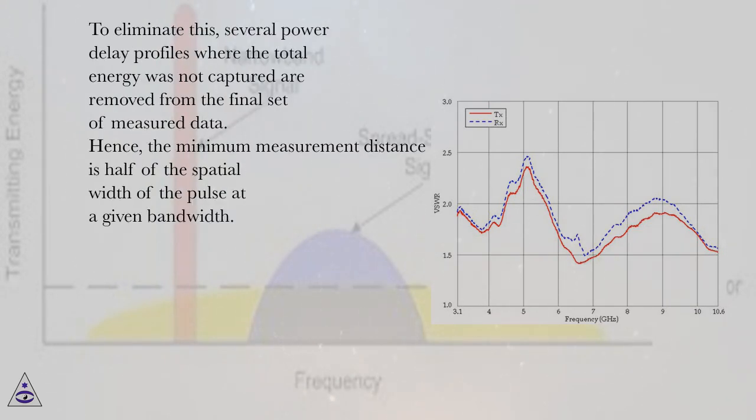To eliminate this, several power delay profiles where the total energy was not captured are removed from the final set of measured data. Hence, the minimum measurement distance is half of the spatial width of the pulse at a given bandwidth.